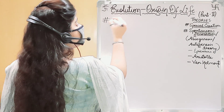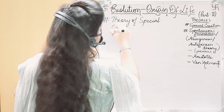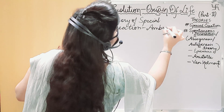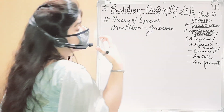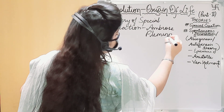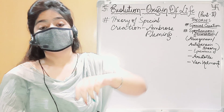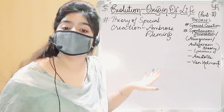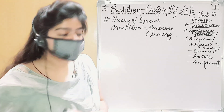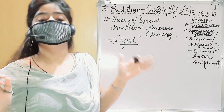The first theory is the Theory of Special Creation, which was given by Ambrose Fleming. It is very important to learn the names of the scientists while learning these theories. Ambrose Fleming said that the earth was created by some supernatural powers that can't be defined — supernatural powers means by the help of God, by Almighty God.